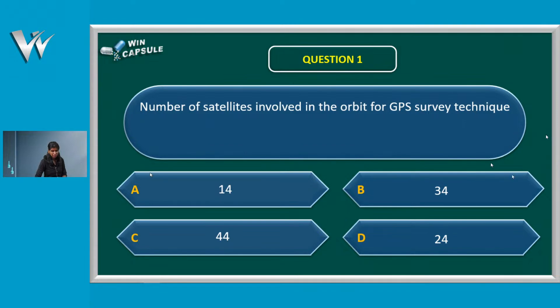First question and answer: let's check the number of satellites involved in the orbit for GPS survey techniques. Options: 14, 34, 44, 24. There are four options.